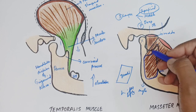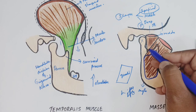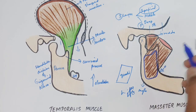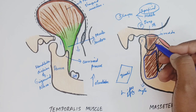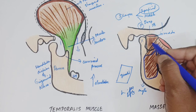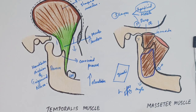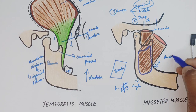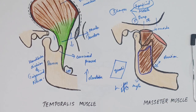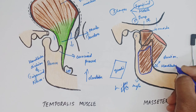The middle layer arises from the lower border of the posterior one-third of the zygomatic arch, descends vertically downwards, and is inserted into the central part of the ramus of the mandible. The deep layer arises from the deep surface of the zygomatic arch and is inserted vertically downwards into the upper part of the mandibular ramus and its coronoid process.